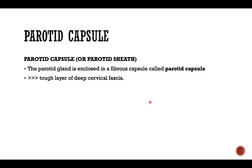Any structure in our body has a protective layer to protect it from stress. In the same way, the parotid gland is enclosed in a fibrous capsule called the parotid capsule. This parotid capsule is a derivative of the deep cervical fascia.